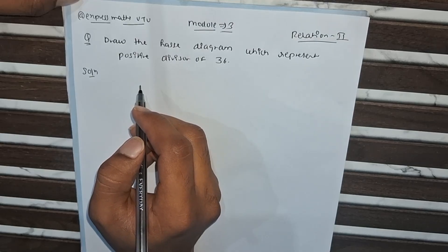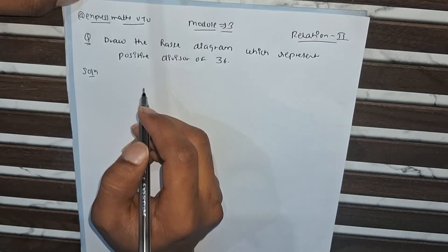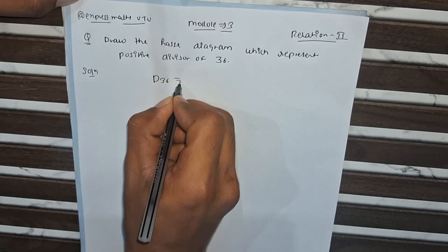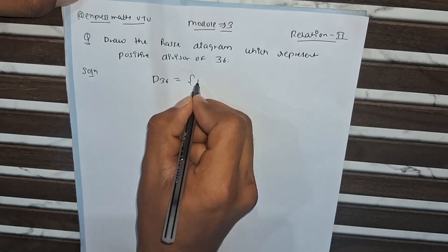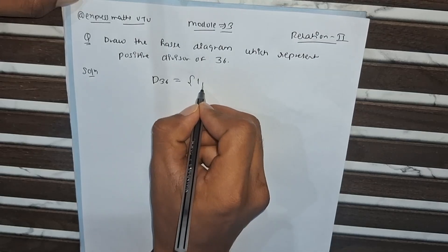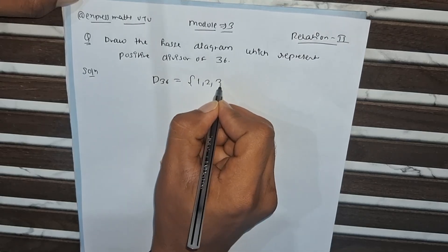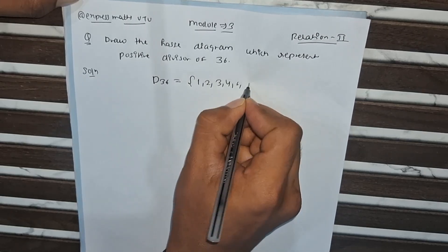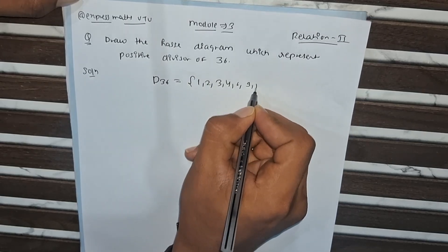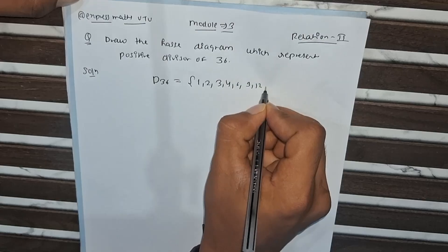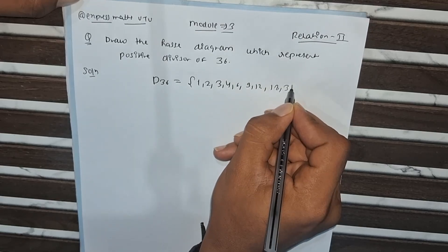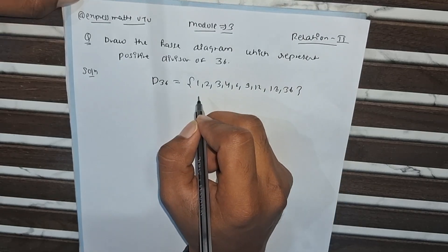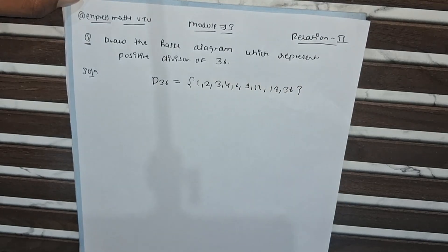The set of all positive divisors of 36 is D(36) = {1, 2, 3, 4, 6, 9, 12, 18, 36}. This is the partial divisor set of 36.